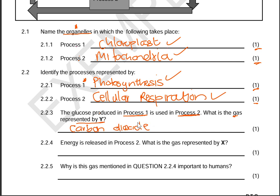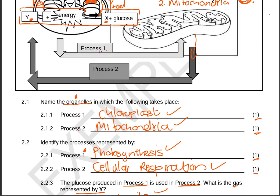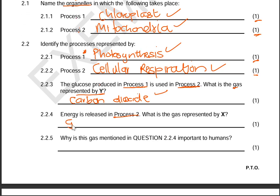Question 2.2.4: energy in the form of ATP is released in process two (cellular respiration). What is the gas represented by X? X is the gas required for cellular respiration to take place. We need two requirements for cellular respiration: glucose and this gas X. X is also produced as a byproduct of photosynthesis. The gas is oxygen — apologies for the slip earlier — the answer is oxygen.